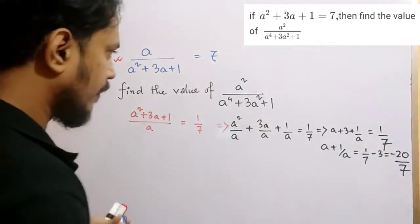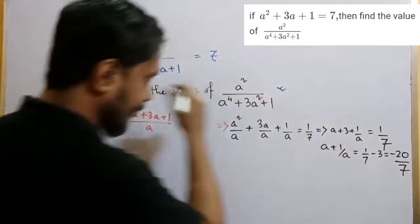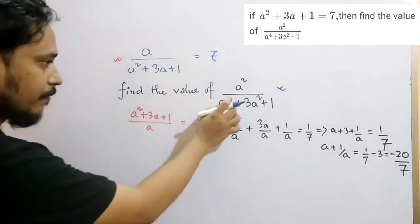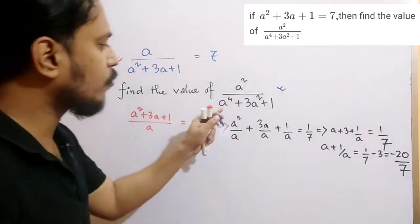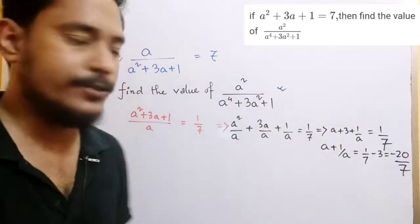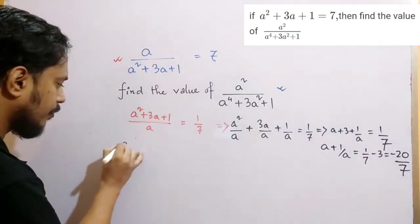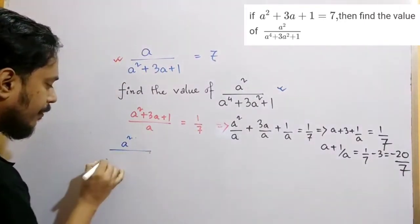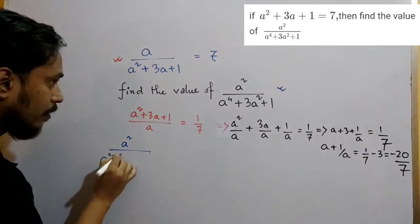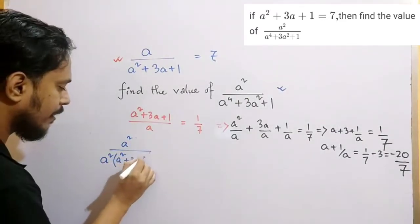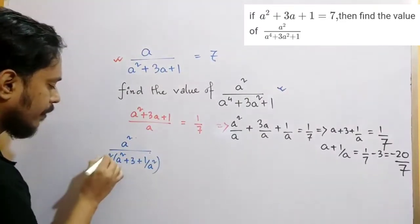Now grab that part. We can take a squared common from the denominator section. a squared by, if you take a squared common, a squared plus 3 plus 1 by a squared, a squared cancels.